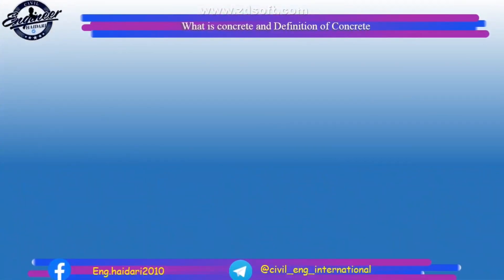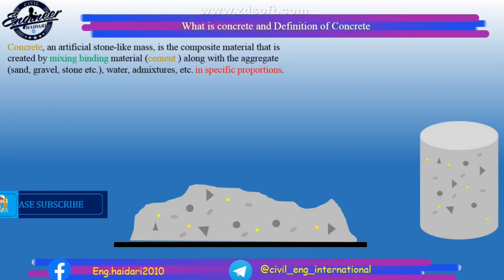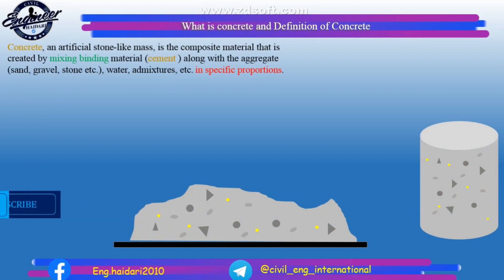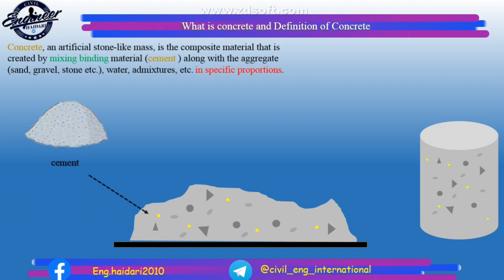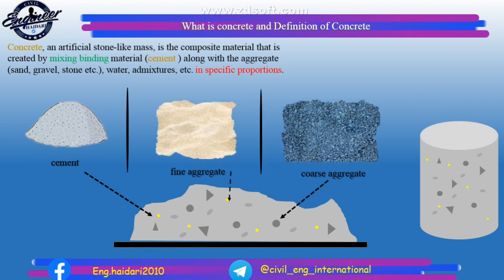What is concrete and definition of concrete? Concrete, an artificial stone-like mass, is the composite material that is created by mixing binding material, cement, along with the aggregate — sand, gravel, stone etc. — water, admixtures, etc., in specific proportions.